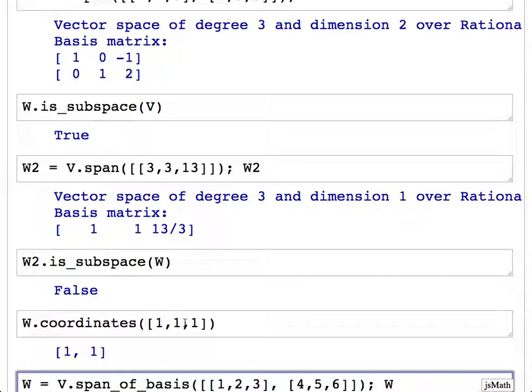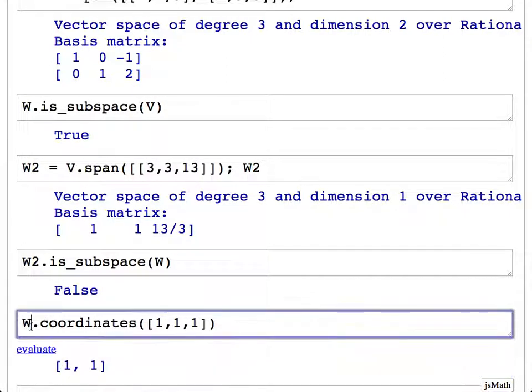Here's an example. W.coordinates([1,1,1]). What about W2.coordinates? What should that do? What would you like it to do? W2 is the span of the vector [3,3,13], so it's all multiples of that vector. I'm asking, how do I write [1,1,1] in terms of the vector [3,3,13]? Exactly. It should say no way in some way.